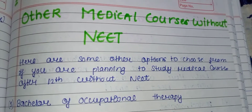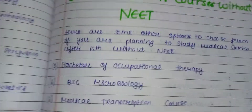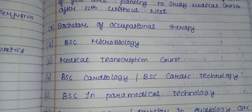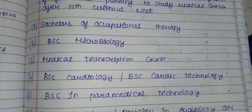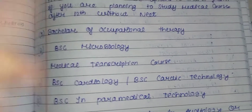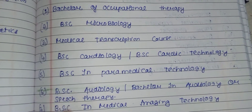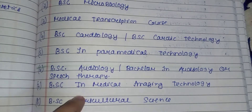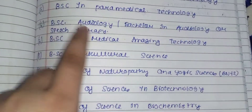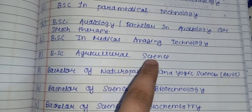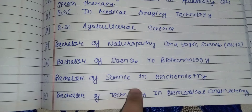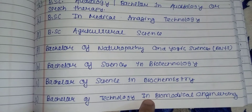Without NEET: Bachelor of Occupational Therapy, BSc Microbiology, Medical Transcription, BSc Cardiology, BSc Cardiac Technology, BSc in Paramedical Technology, BSc in Audiology or Speech Therapy, BSc in Medical Imaging Technology, BSc Agriculture Science, BSc of Naturopathy and Yogic Science, Bachelor of Science in Biotechnology.